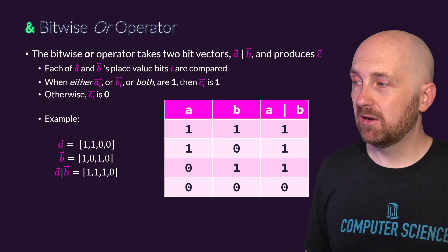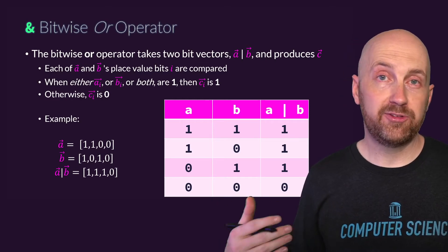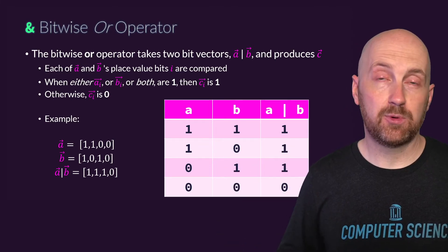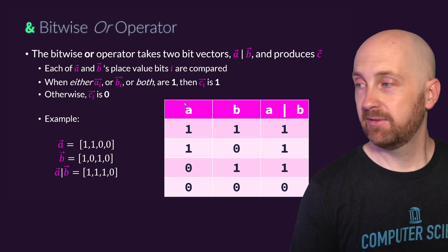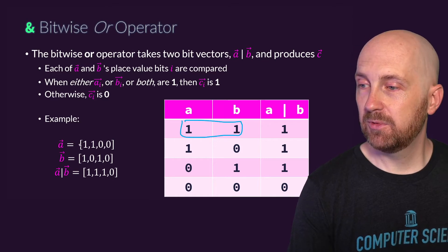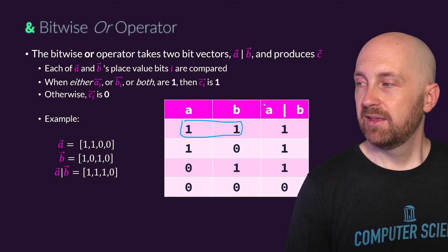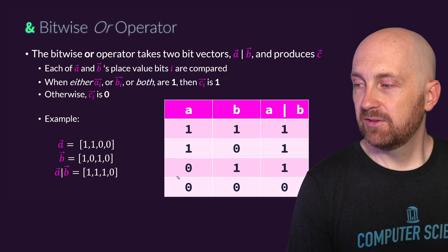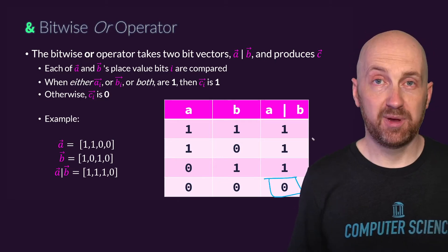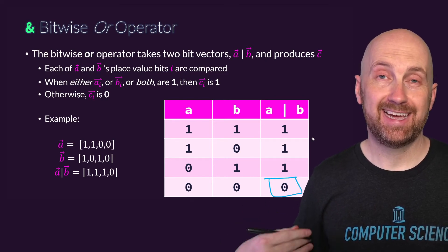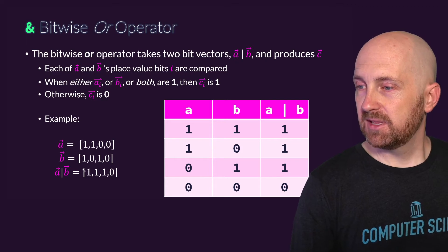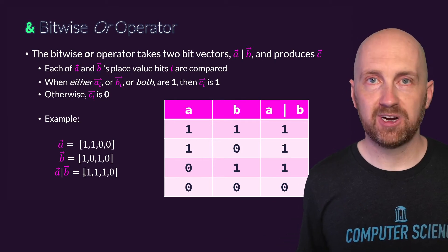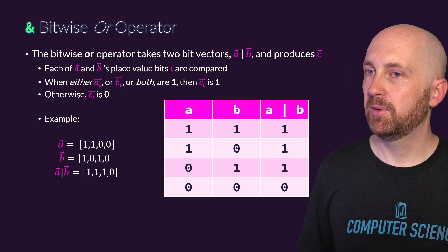The OR operator works similarly — as we move through each bit in the two vectors, if at least one of the two bits at the same position is one, the resulting bit is one. If both bits are one, that's fine too. Where both input bit fields have a zero at the same position, the result is zero. We produce this third bit field and can store that result in a new variable for further computation or bitwise operations.